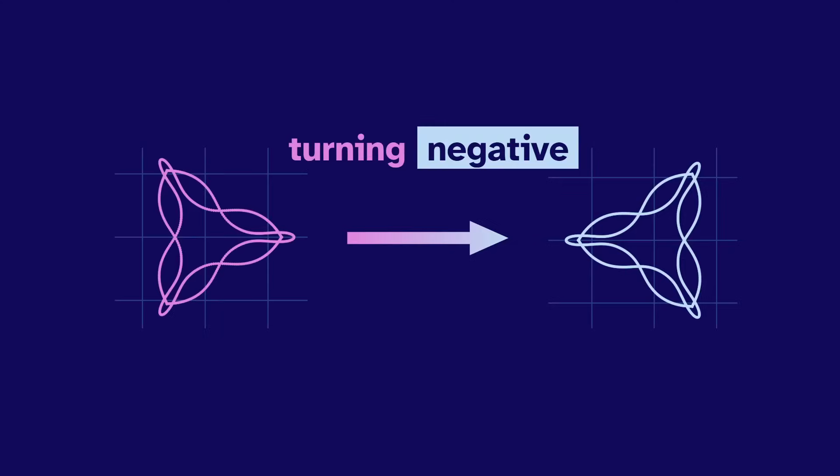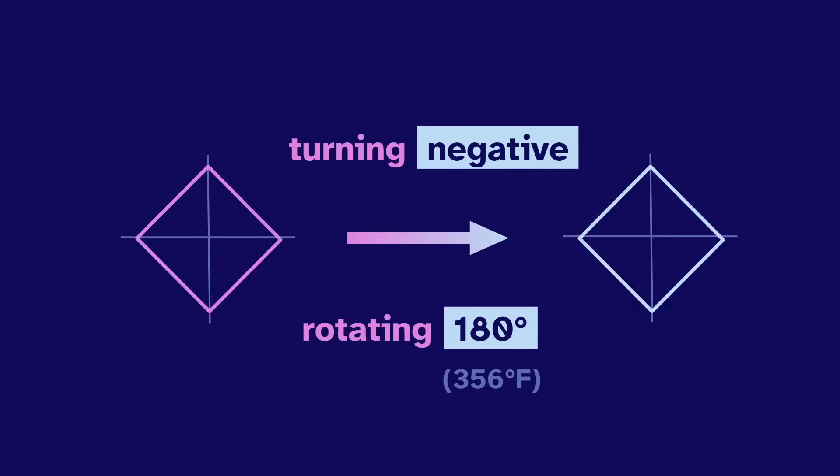And in the complex numbers, turning negative is the same as rotating 180 degrees. That's 356 Fahrenheit for all the American viewers. And that's why we didn't notice this with the circle or square. They don't change when rotated.